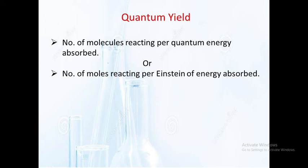Light is absorbed and how many molecules react — that is the key idea. The first definition: number of molecules reacting per quantum of energy absorbed. The second definition: number of moles reacting per Einstein of energy absorbed. From the previous lecture, one quantum of energy is equal to h-nu, and Einstein of energy means one mole — E is equal to N times h-nu.